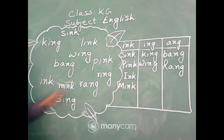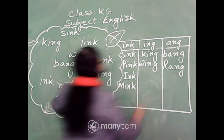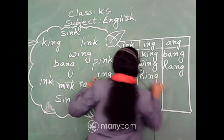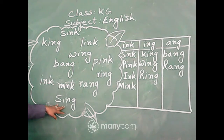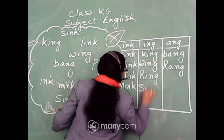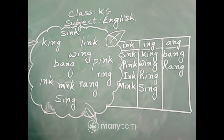Next is ring, r-i-n-g. And next is sing, s-i-n-g. So here we can see that there are four words with -ink, four words with -ing, and two words with -ang.